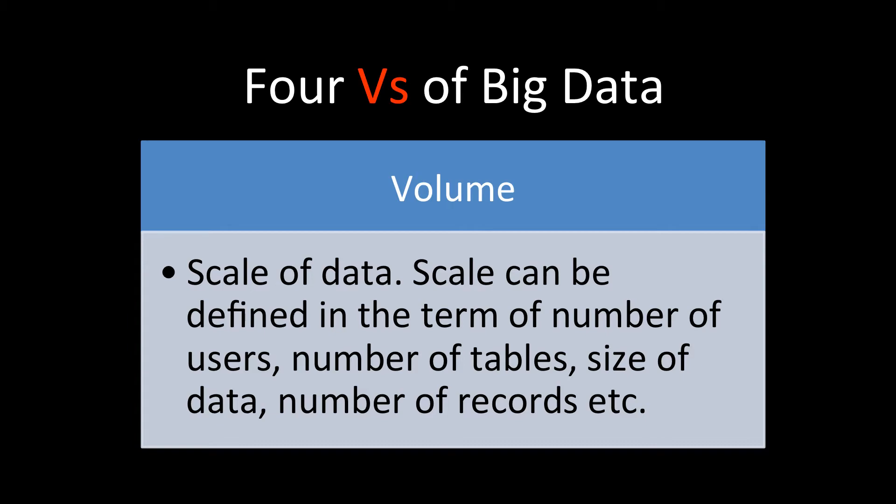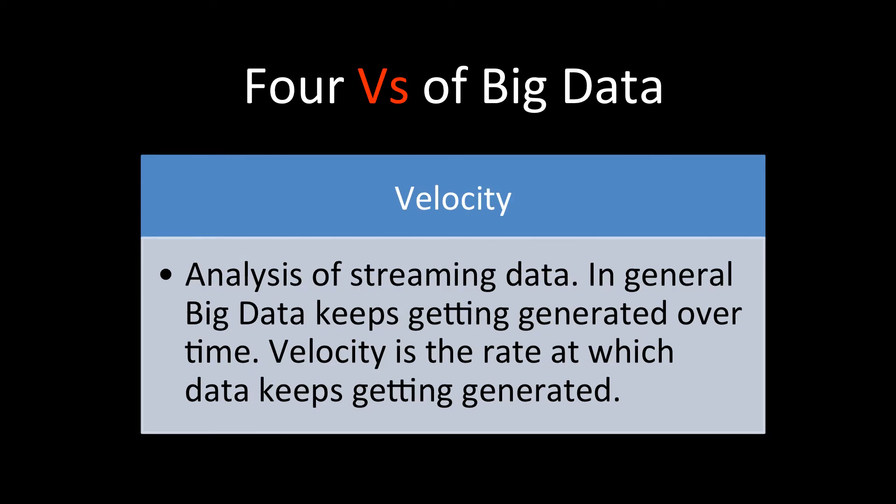Then we have velocity. Most of the time, data is not static but continuously generated. This generation of data is like streaming, and big data keeps getting generated over time. Velocity is the rate at which data keeps getting generated.